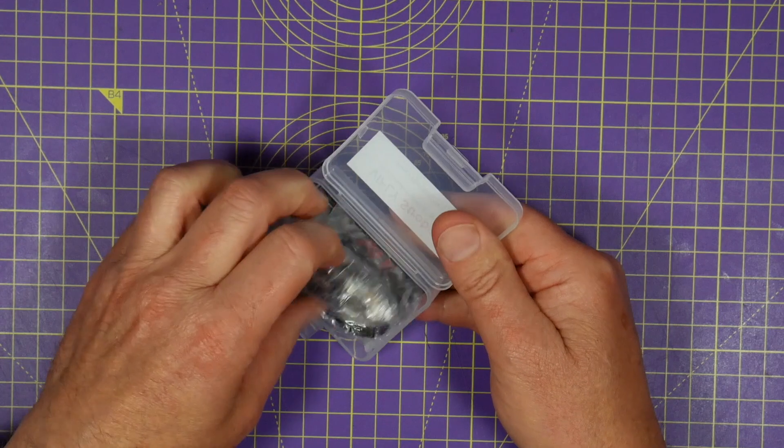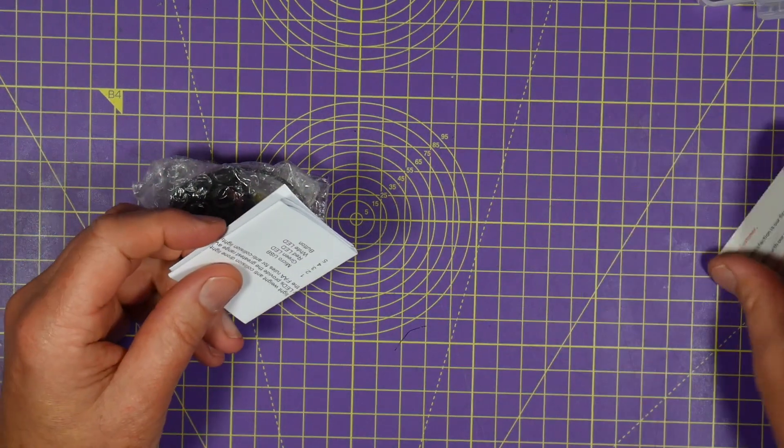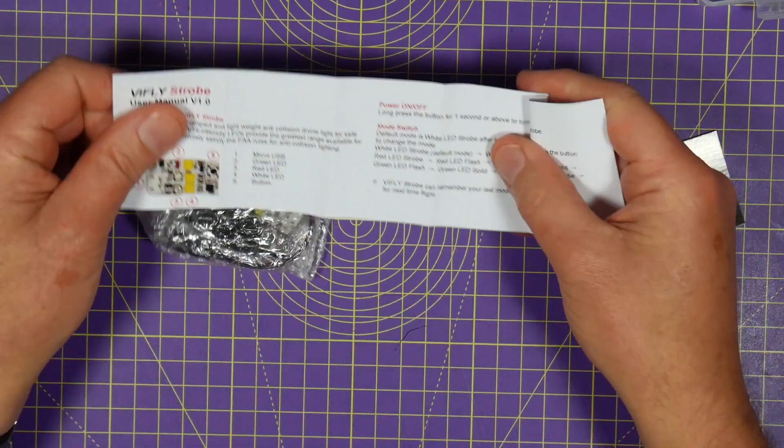First off is the strobe. At first glance it's nothing special. There's loads of anti-collision drone strobes but as you come to expect with ViFly they've thought about it a little bit harder.